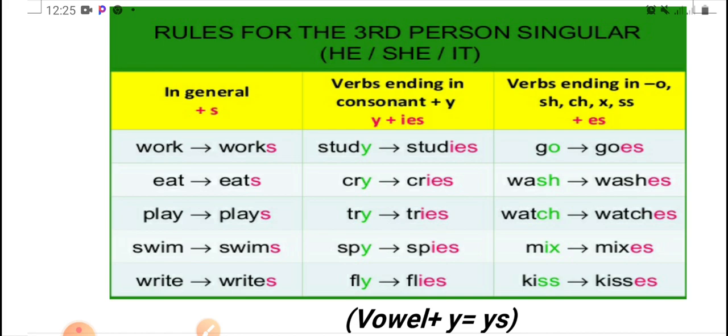But verbs ending in consonant plus y, it becomes i, e, s. Like study, I omit y and put i, e, s. Cry cries, try tries, spy spies, fly flies.